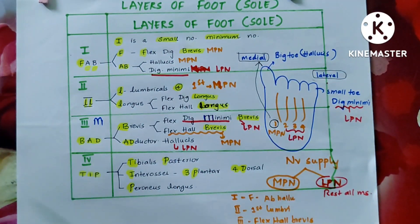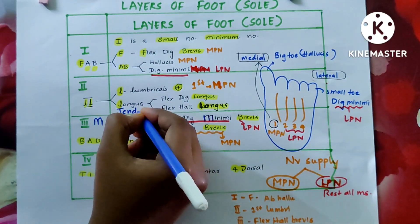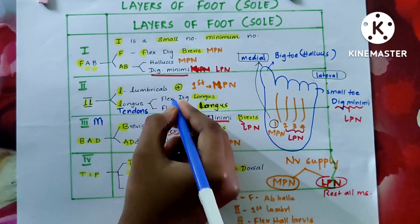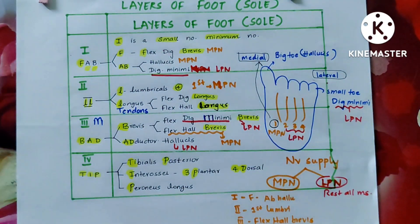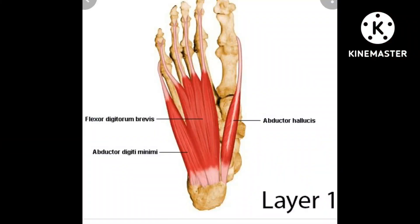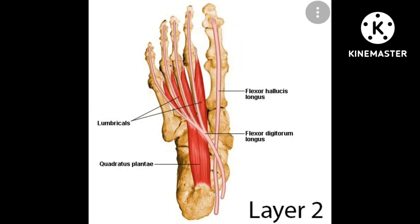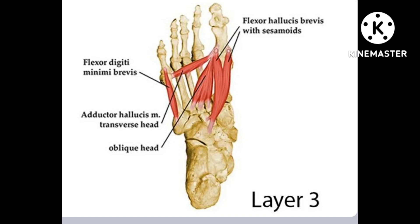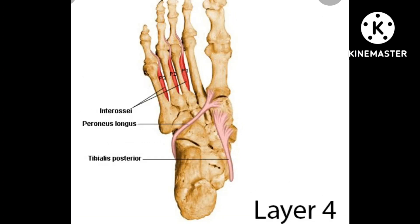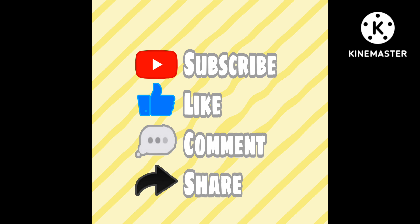To summarize, the medial plantar nerve supplies: from layer one — flexor digitorum brevis and abductor hallucis; from layer two — the first lumbrical only; from layer three — flexor hallucis brevis only. The rest of the muscles are supplied by the lateral plantar nerve. Note that the longus tendons in layer two belong to muscles not in the sole. So these are the four layers of the foot with their muscles and nerve supply — layer one FAB, layer two LL for lumbricals and longus, layer three BAD for brevis and adductors, layer four TIP for tibialis posterior, interossei, and peroneus longus. Thank you, please like, share, and subscribe.